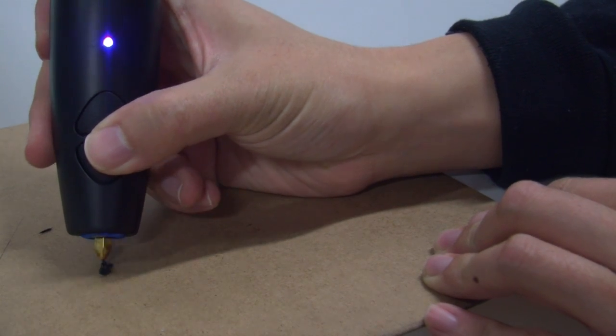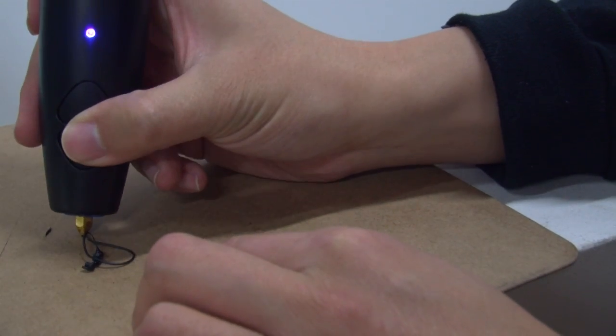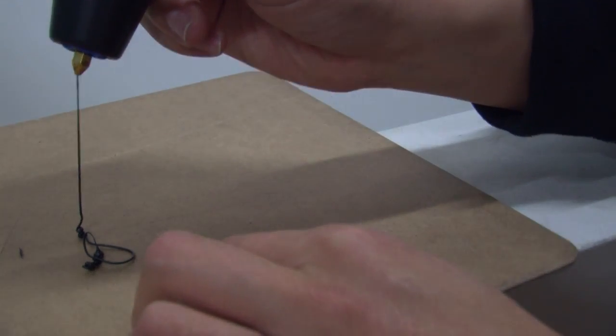The 3Doodler is probably the lowest cost 3D printing device that prints plastic that you can buy in the market today.